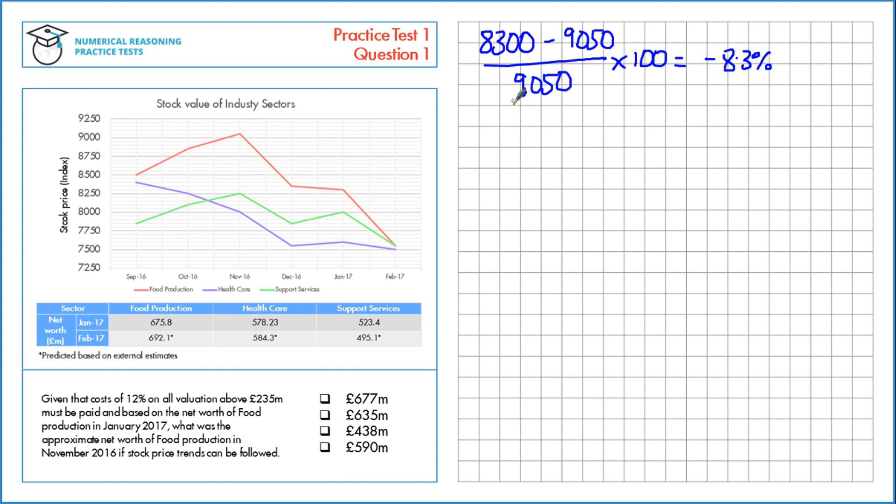If there's a decrease of 8.3% from November to January, that means this was a multiplier of 100 take away 8.3%, which is 91.7%, equivalent to a multiplier of 0.917. So if we look at the value in January, that's 91.7% of the November value.